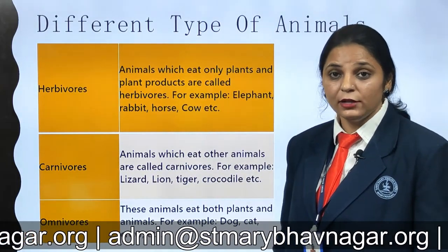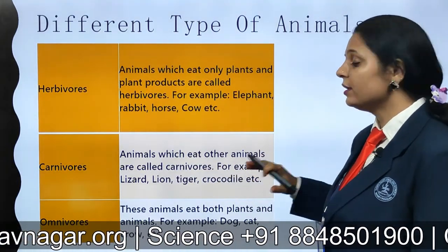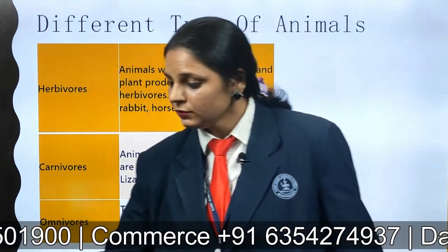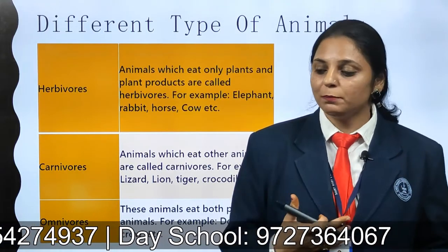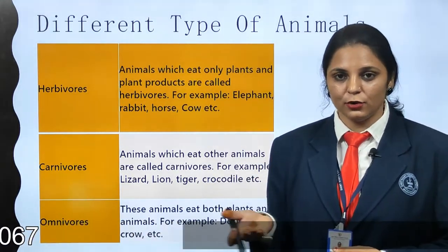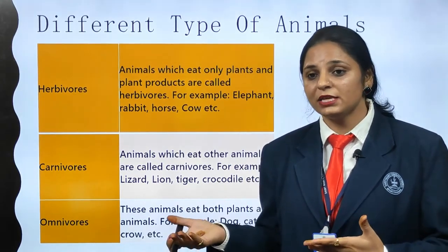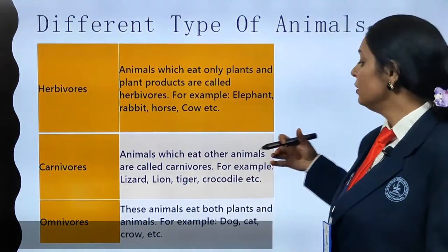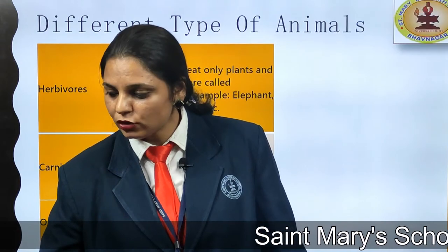Next are carnivores — they are animals that eat other animals. Examples are lizards, lions, tigers, and crocodiles. Omnivore animals eat both plants as well as animals. You can consider the dog — sometimes dogs eat the flesh of animals, and sometimes you throw biscuits to them, which is a plant product. So dogs are also considered omnivores, along with many other examples that depend on both plants and animals.